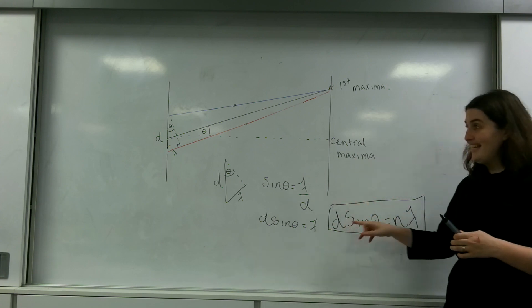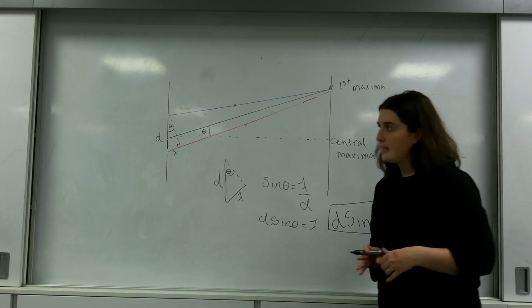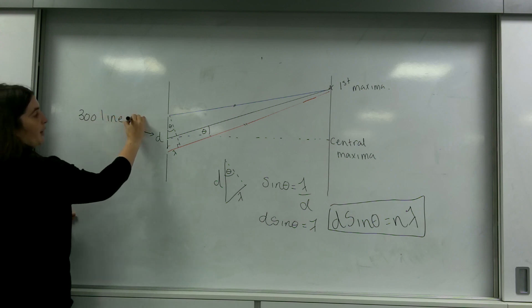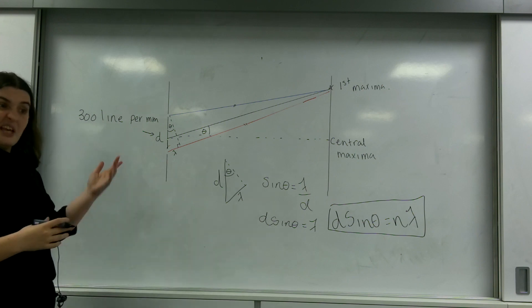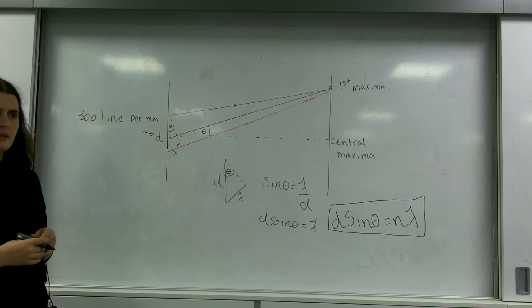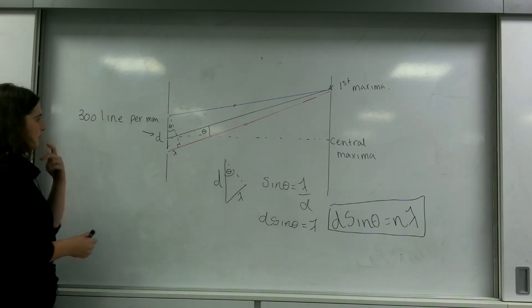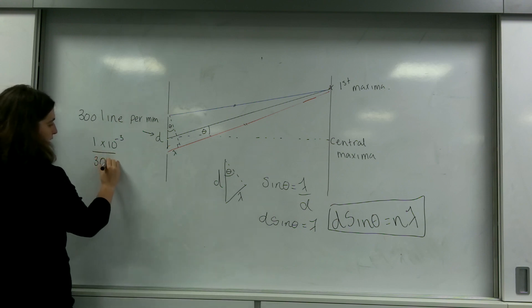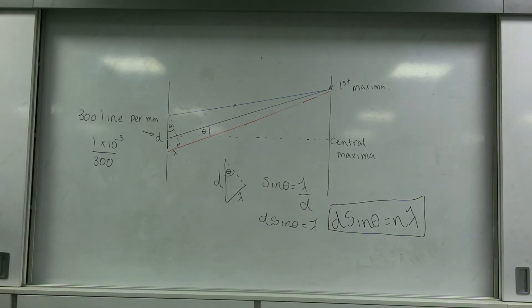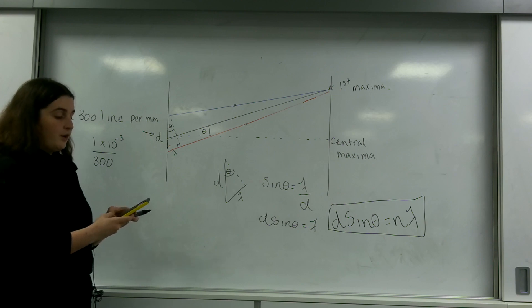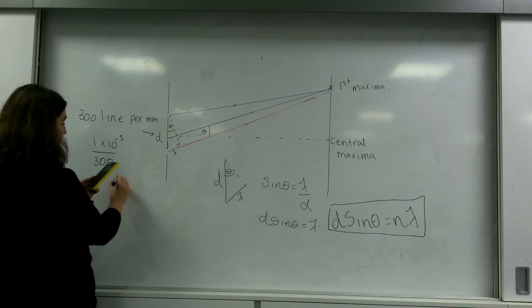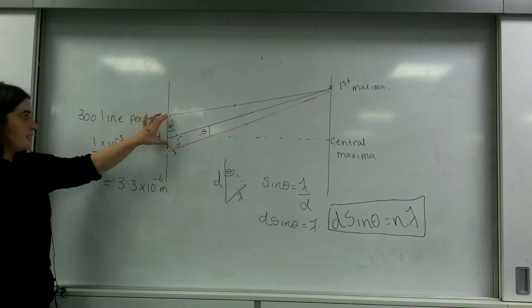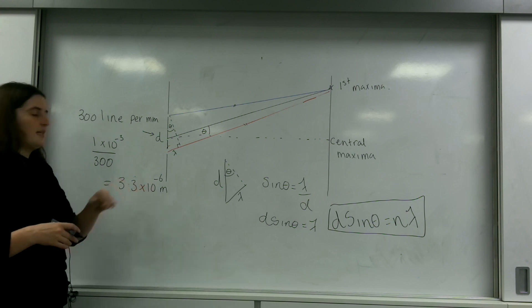The slit separation D is often given in a way that needs converting. For example, they might say there are 300 lines per millimetre. To get D as a distance, you divide 1 times 10 to the minus 3 metres by 300, which gives 3.3 recurring times 10 to the minus 6 metres. That is the gap between one slit and the next.